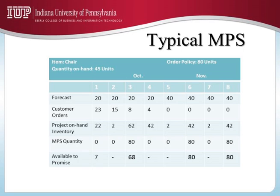Now let's look at a typical master production schedule computer printout. In this simple example, you have an eight-week planning horizon. This is typically a rolling horizon — right now we are at the end of September and planning for October and November. After one week, the second week of October becomes week number one, and the first week of December becomes week eight in the planning horizon. That is what is called the rolling planning horizon.